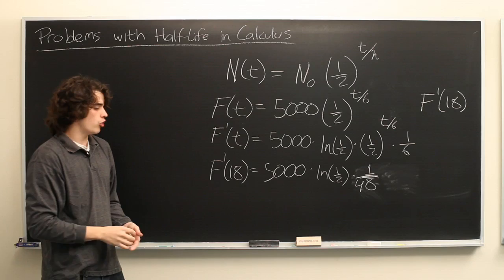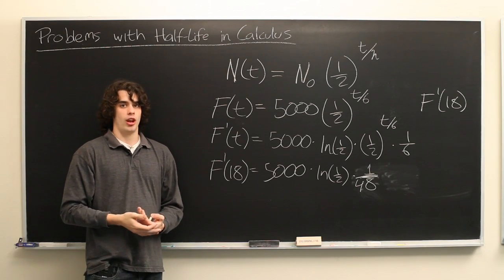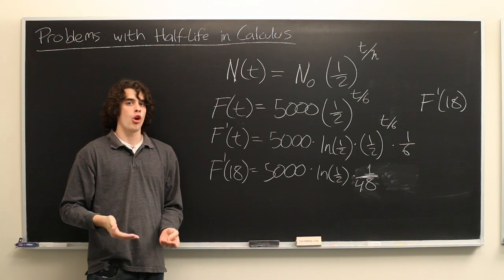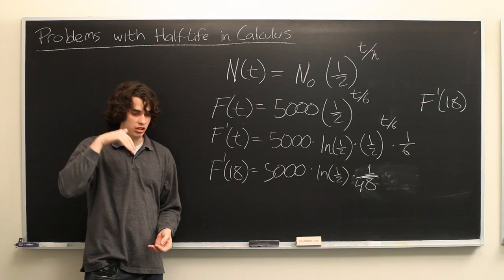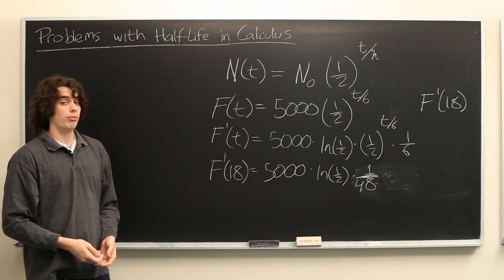And that's just one example of a type of problem that could come up with this sort of formula. But there's plenty of others. You might be asked, what is the maximum rate of change of the number of francium atoms with respect to time? In other words, at what point is the number of francium atoms decreasing most rapidly?